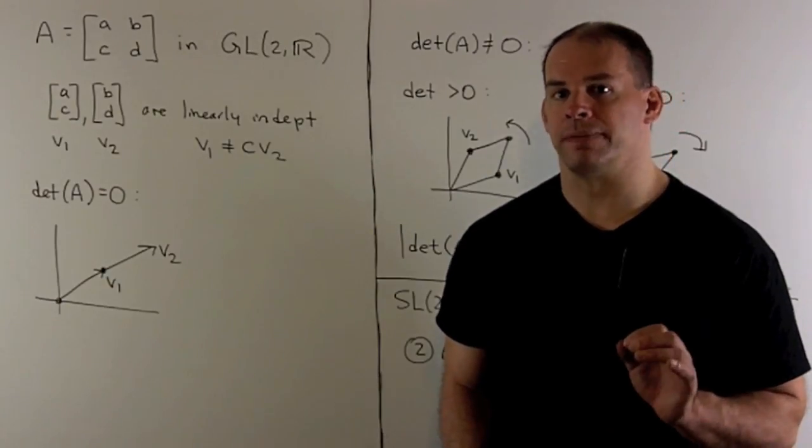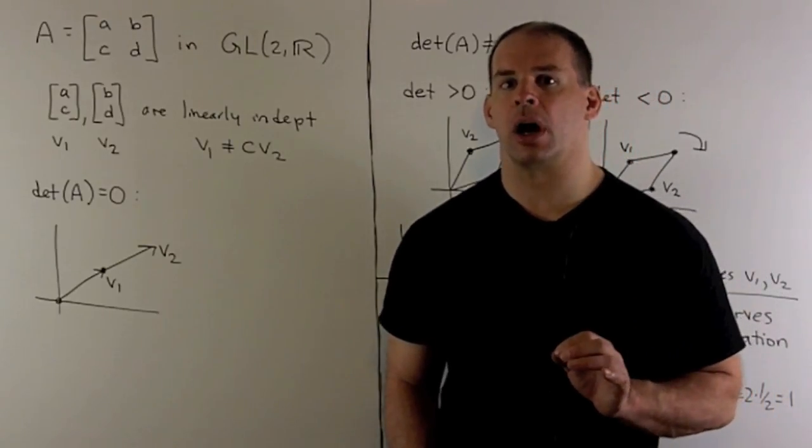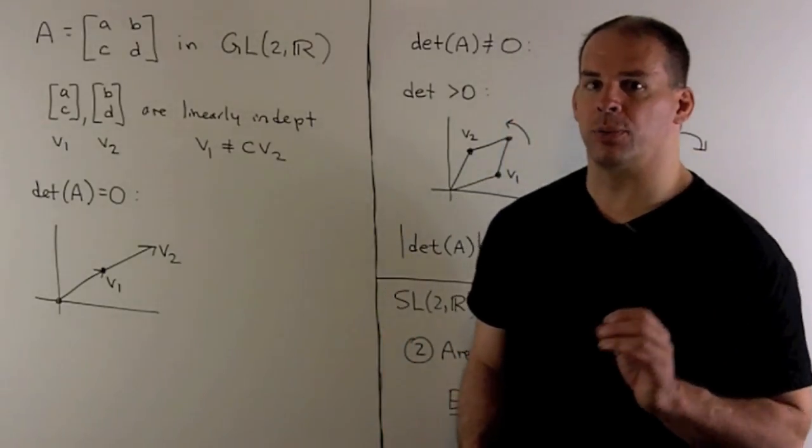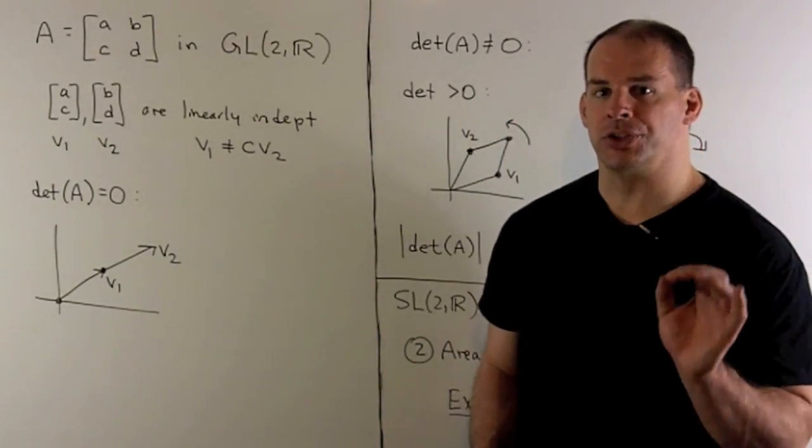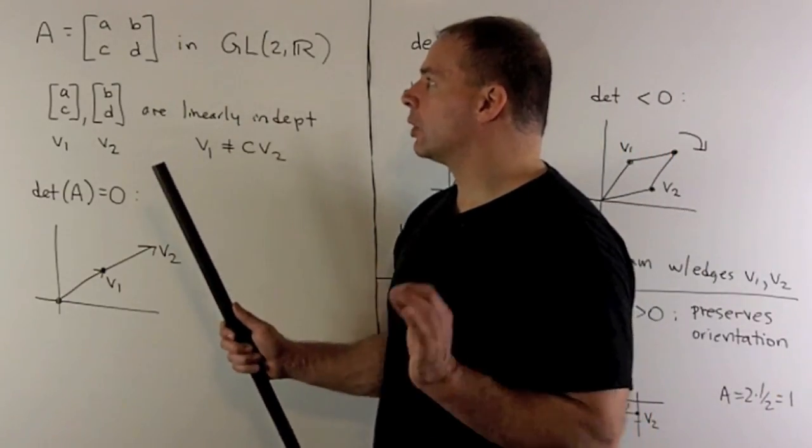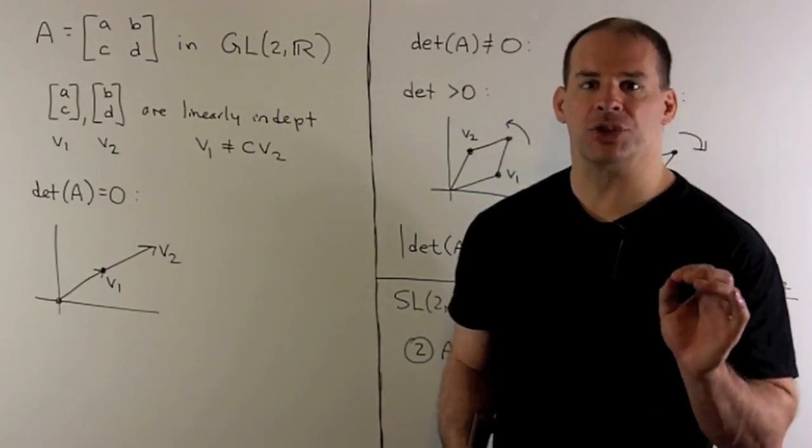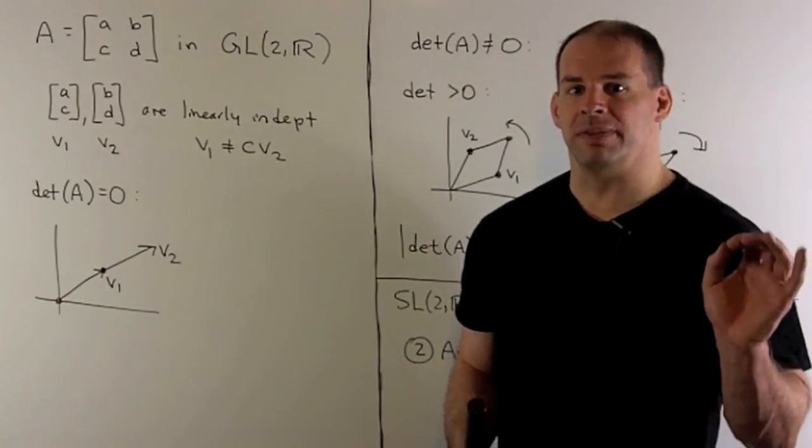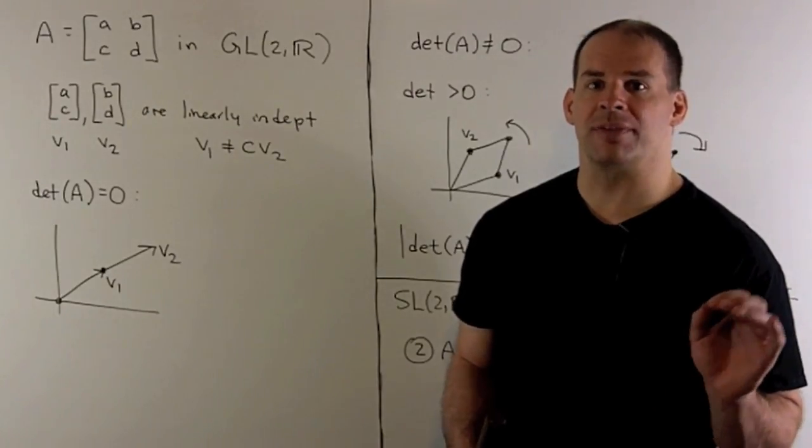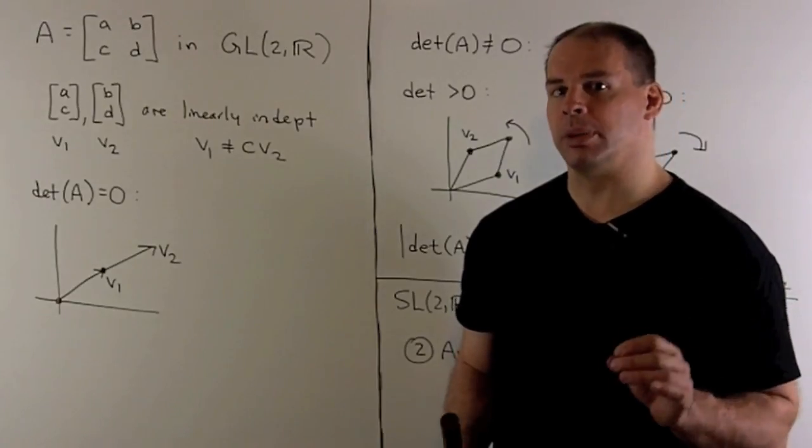Now, before we get to our final question, let's get an idea of what it means for a matrix to be in GL(2,R) and SL(2,R). If we're in GL(2,R), the determinant is non-zero. So, if we're in the matrix ABCD, call our column vectors V1 and V2. To have the determinant non-zero, it says that V1 and V2 form a linearly independent set. Now, since we just have two vectors, that means V1 is not a multiple of V2.